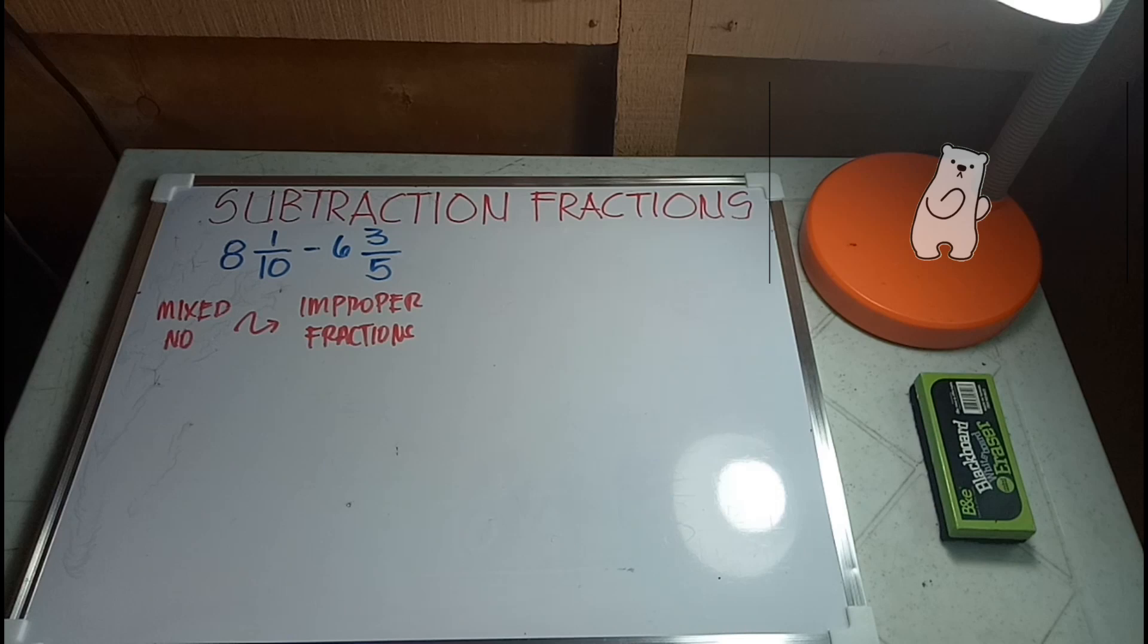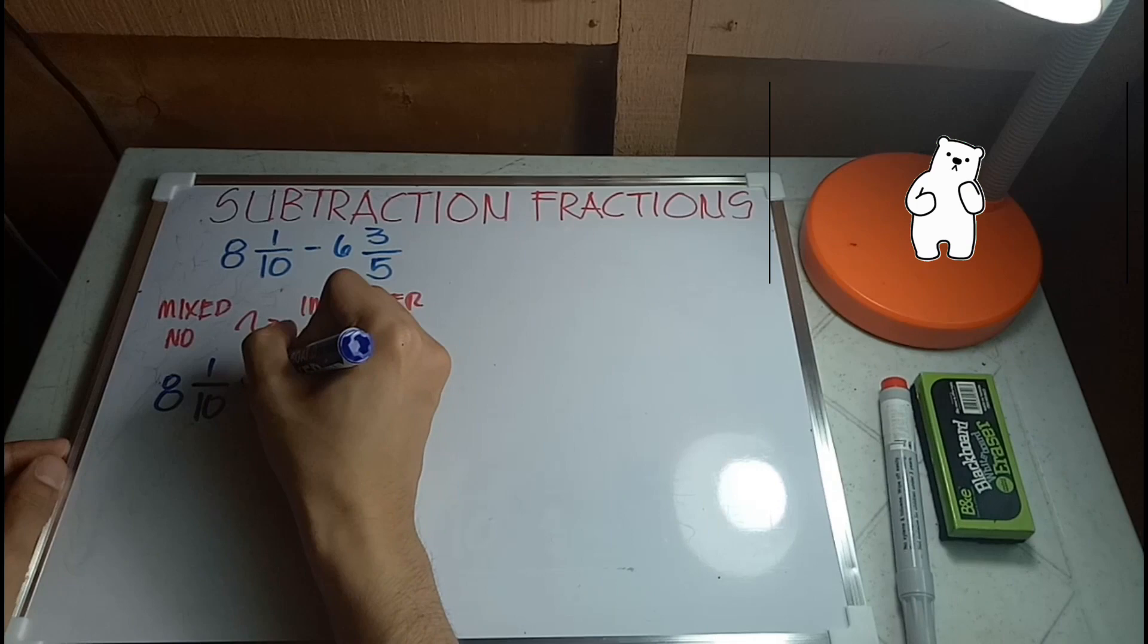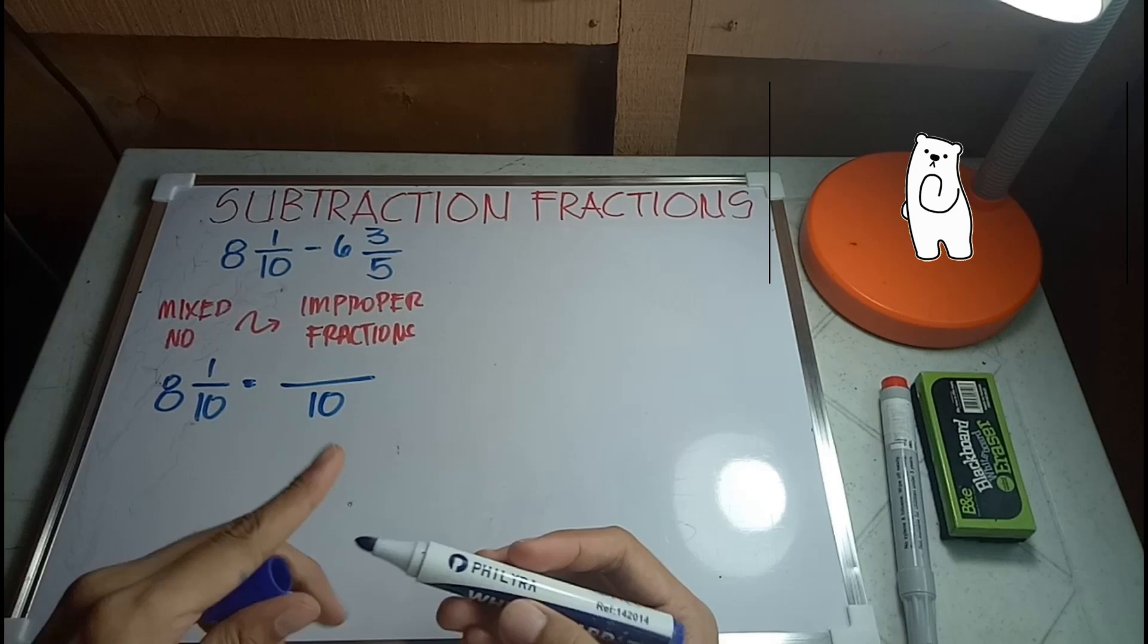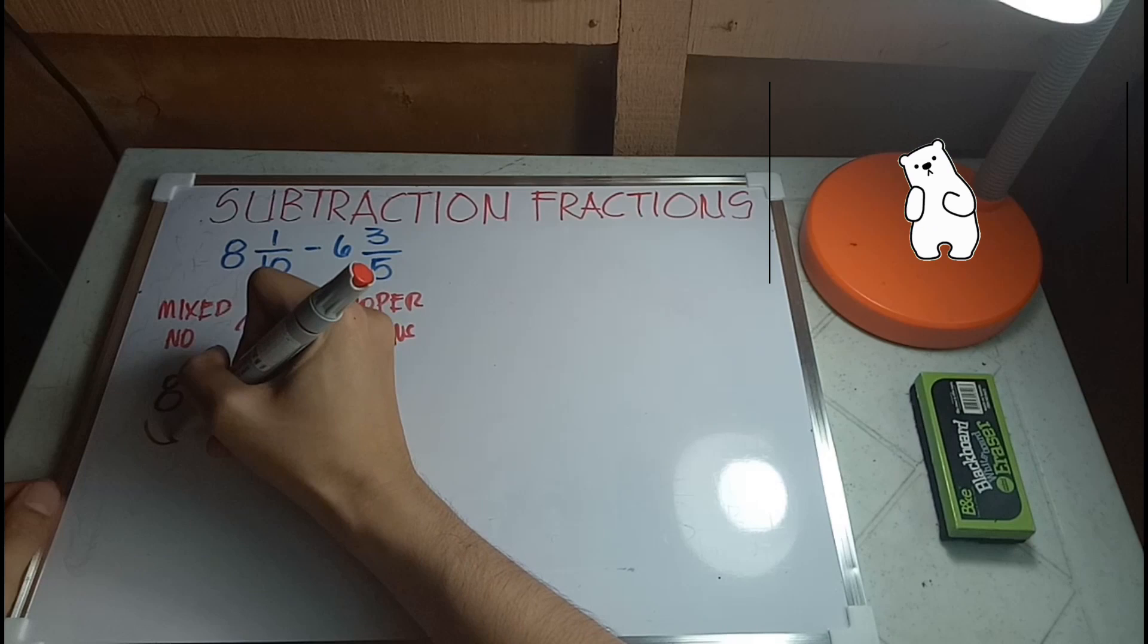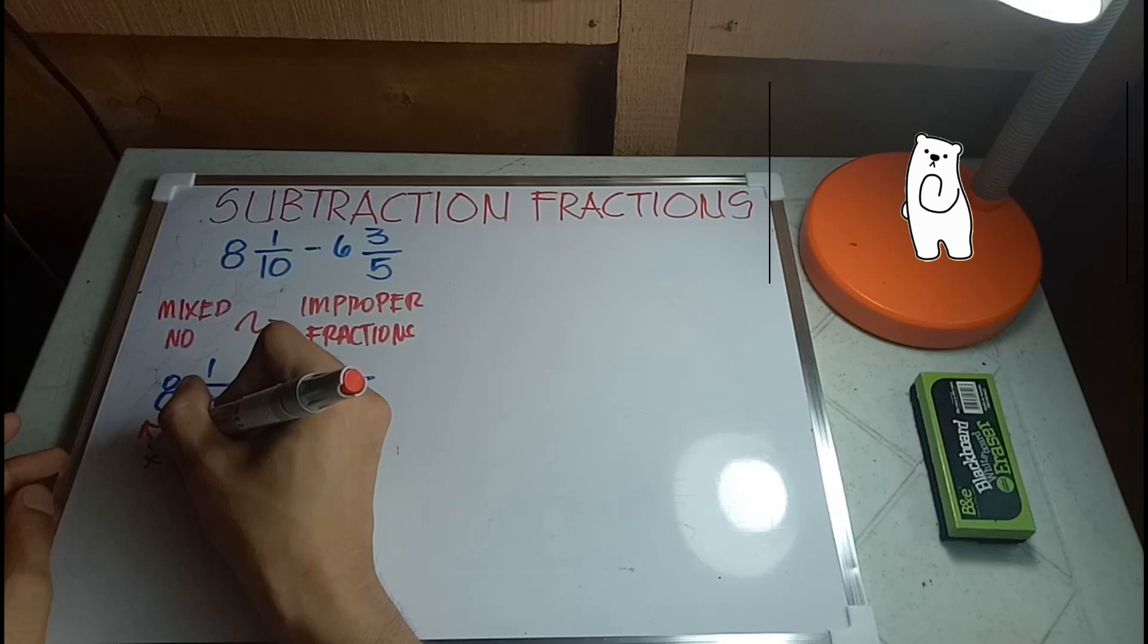So mixed number to improper fractions, converted into improper fractions. It's easy to convert. So 10 and 8 over 10, first thing to do is copy the denominator. After copying it, we will proceed in solving for the numerator. So what we will do is multiply the denominator and the whole number.